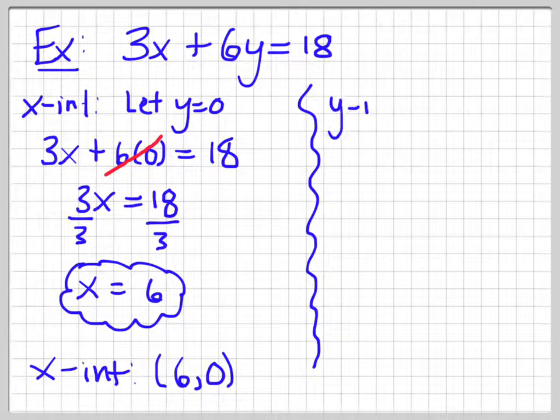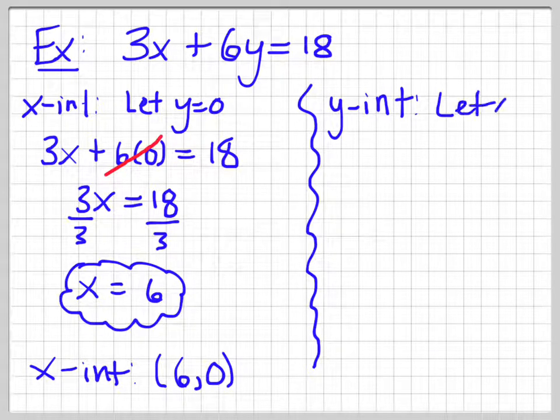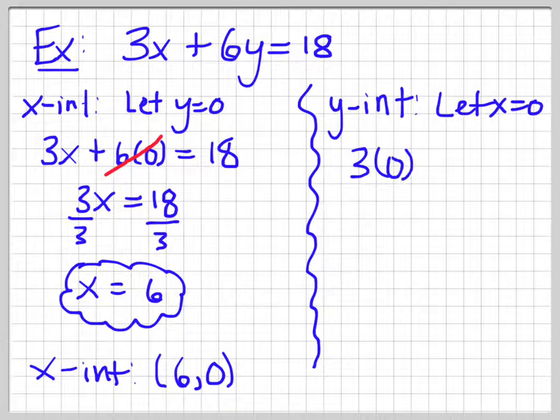So, to find my y intercept, I do the opposite. I let x equal 0. So, when I let x equal 0 something nice happens. So, 3x, oops, 3 times 0, so I'm letting x equal 0, plus 6y is equal to 18.